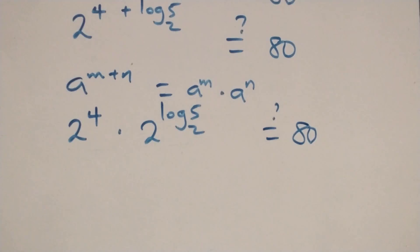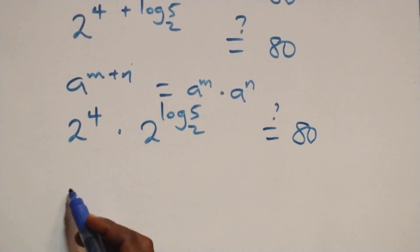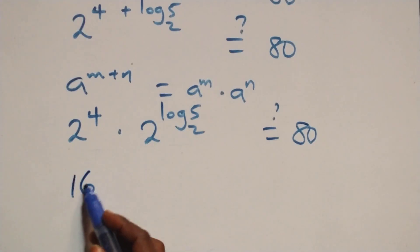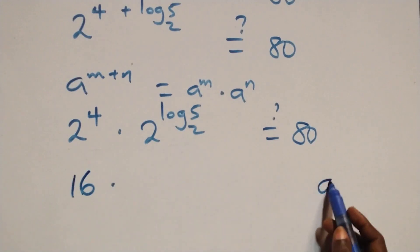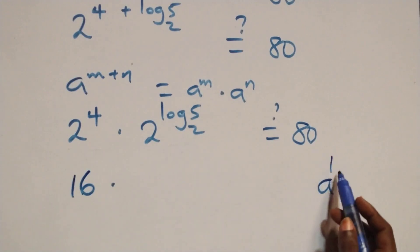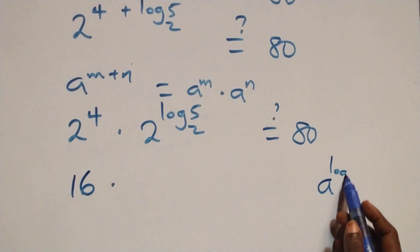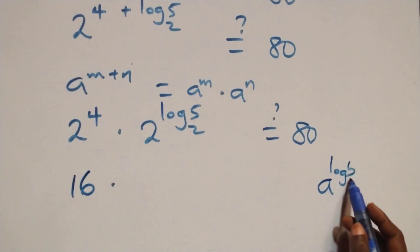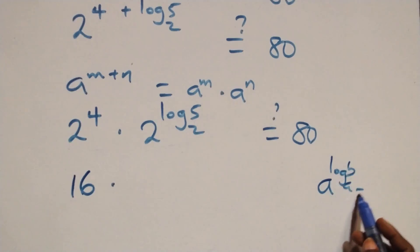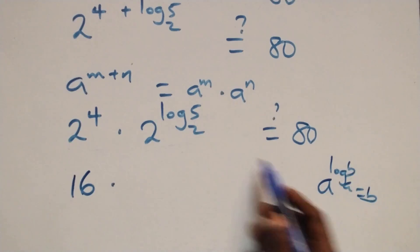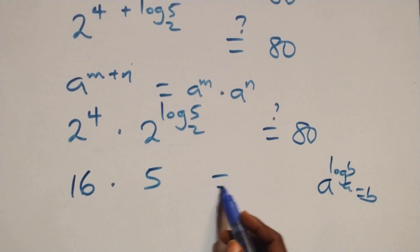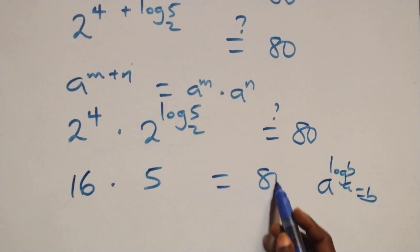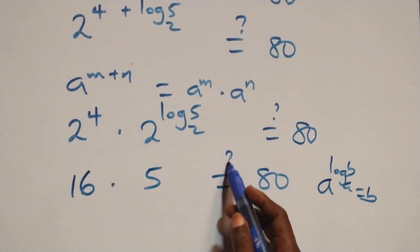2 raised to power 4 is 16. For the remaining term, we use the identity a raised to power log_a(b) equals b, so 2 raised to log₂5 equals 5. Therefore we have 16 times 5, which equals 80 on the right-hand side.